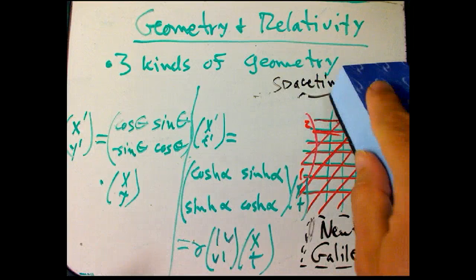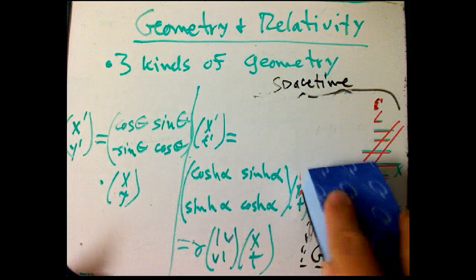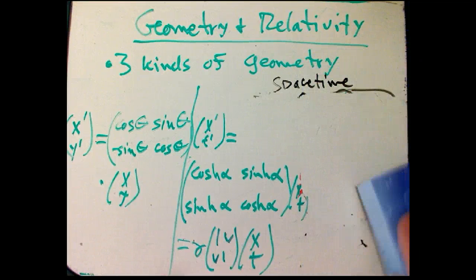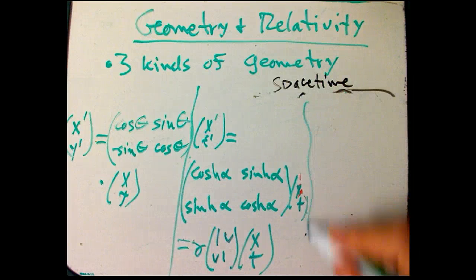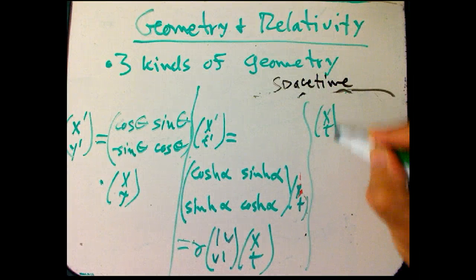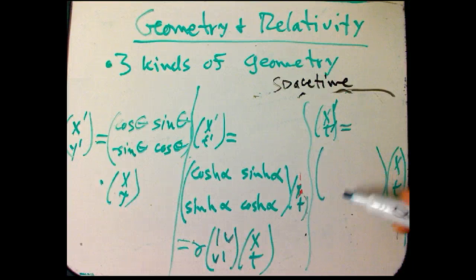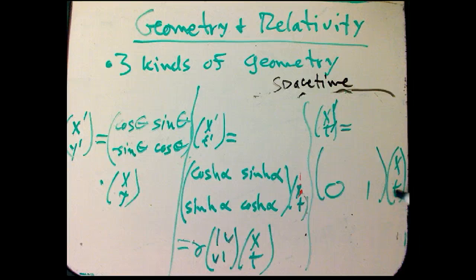And then the Newtonian world, or the Galilean transformations, which we implicitly use all the time, without really thinking about it or having a name for it, is that x prime, t prime, the t has to stay, t prime has to equal t. So the bottom row has to just be 0, 1.